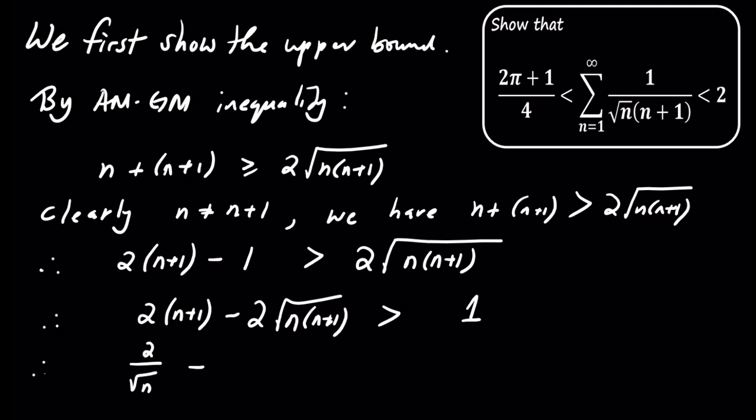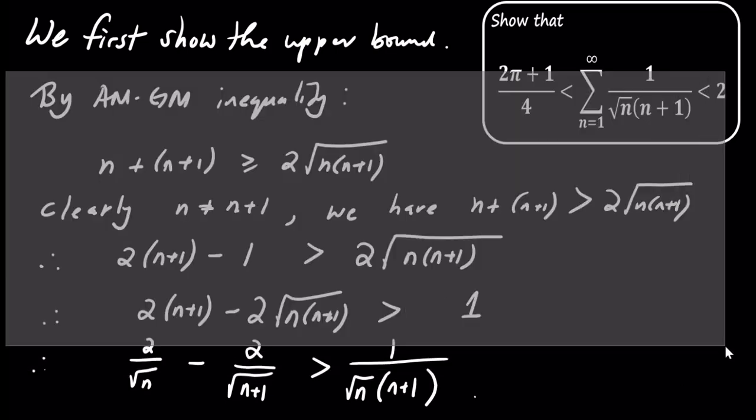Or equivalently, we can say that 2 divided by the square root of n minus 2 divided by the square root of n plus 1 is greater than 1 over the square root of n times n plus 1.